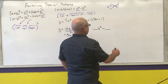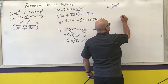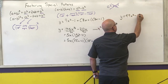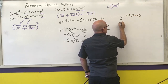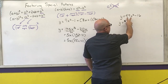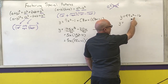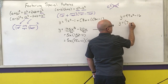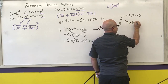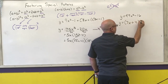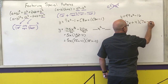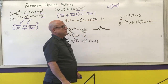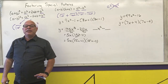Next one: 49x squared minus 16. Well, 49 is a perfect square, 16 is a perfect square. So I have the square root of the first plus the square root of the last: (7x + 4)(7x − 4).